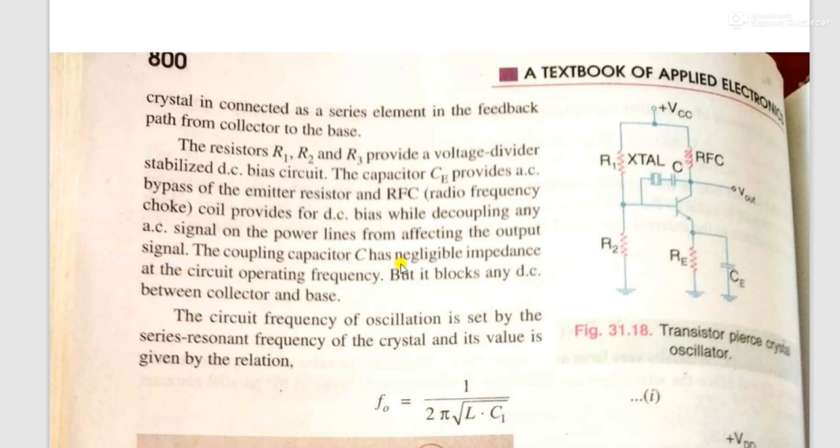The coupling capacitor C has negligible impedance at the circuit operating frequency. It has negligible resistance or opposition to circuit current. But it blocks any DC between the collector and base.